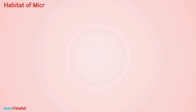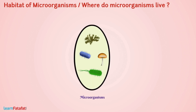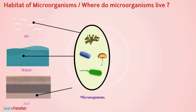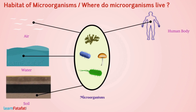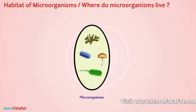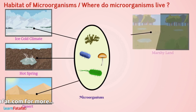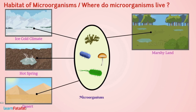Habitat of microorganisms: Microorganisms are everywhere around us — in air, water, soil, in our body and the bodies of other animals and plants. These organisms can survive in all types of environments such as ice-cold climates, hot springs, deserts, marshy lands, and even at the bottom of the sea.